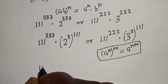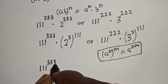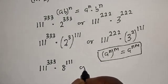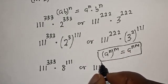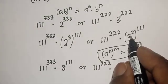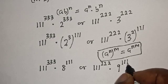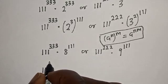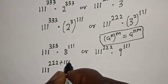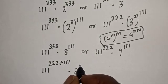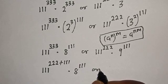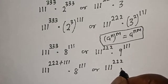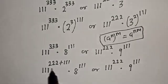This gives us 111 raised to the power 333 multiplied by 2 cubed, which is 8, all to the power of 111. And the other expression is 111 raised to the power 222 multiplied by 3 squared, which is 9, raised to the power 111. So we have 111^333 × 8^111 versus 111^222 × 9^111.